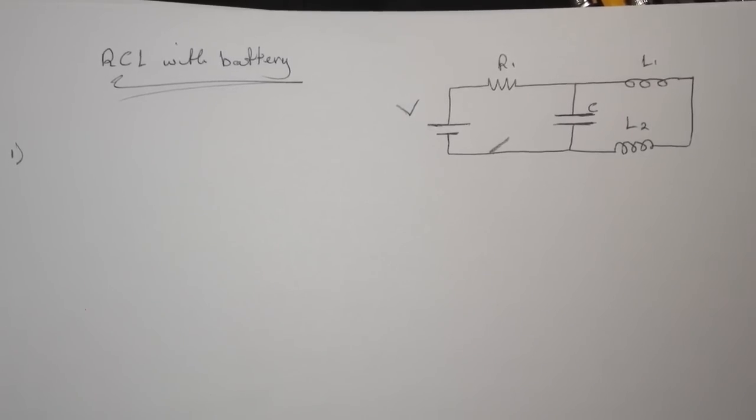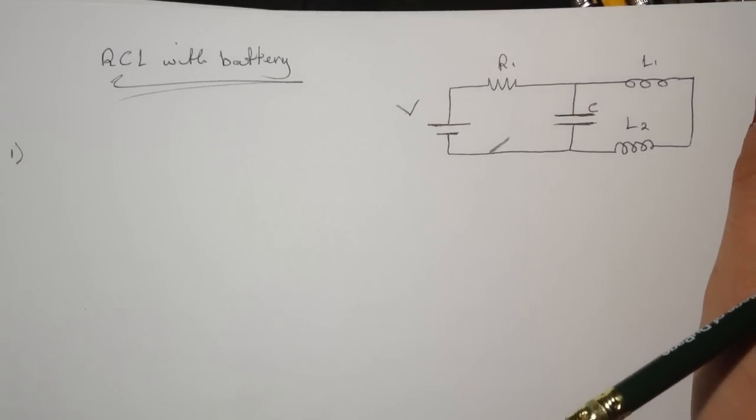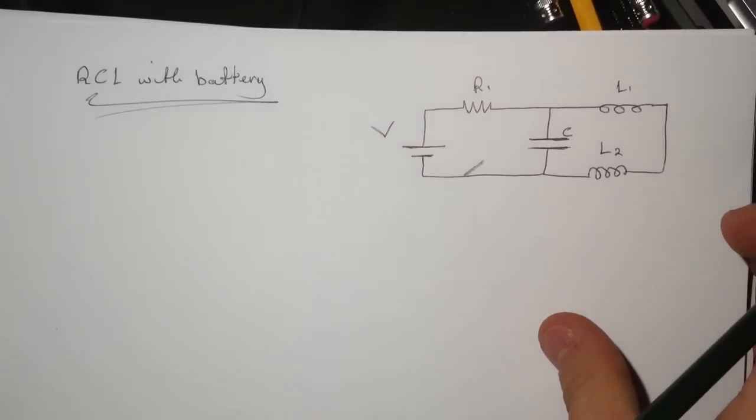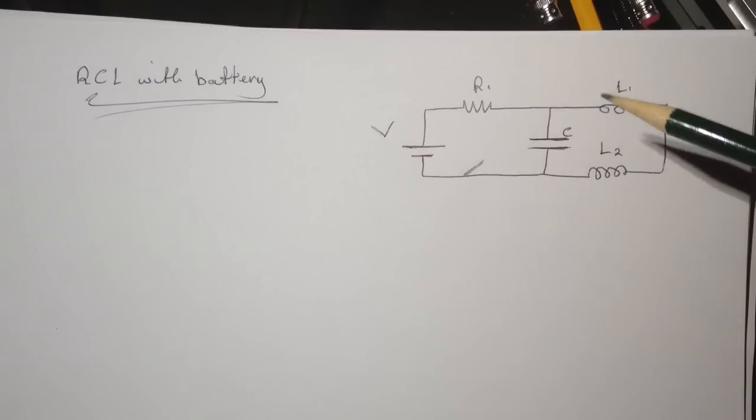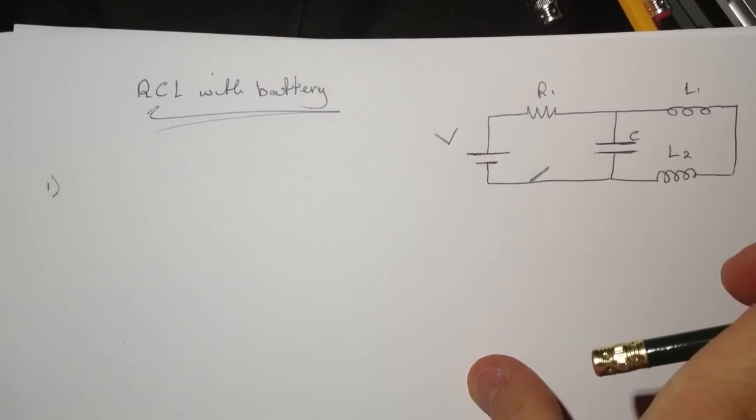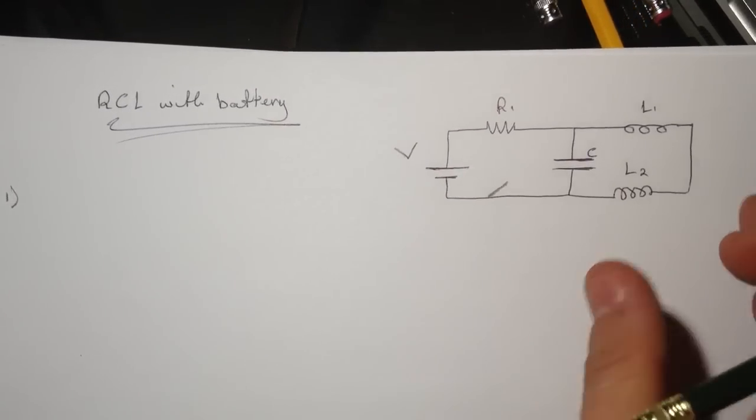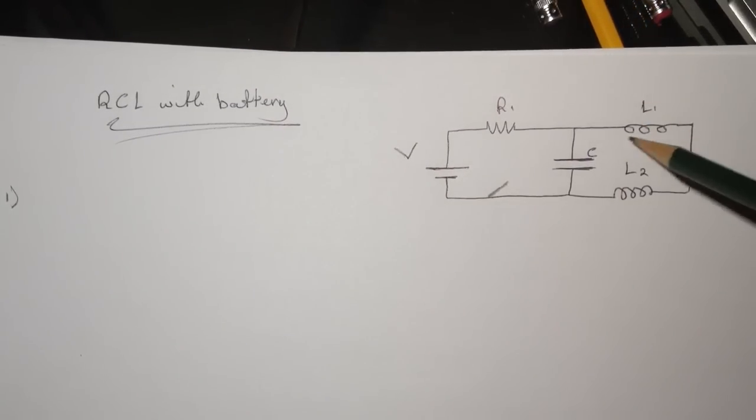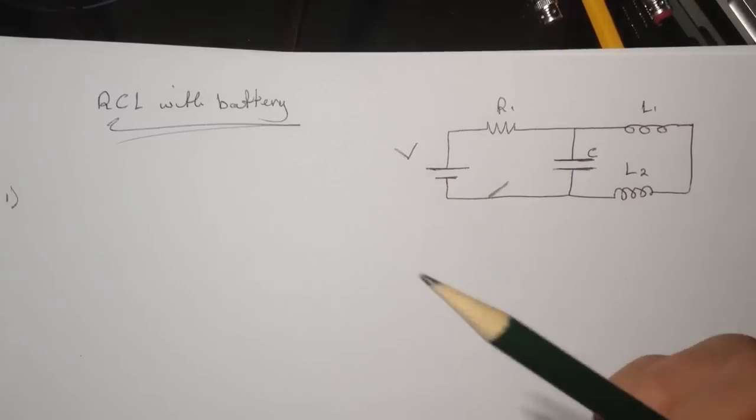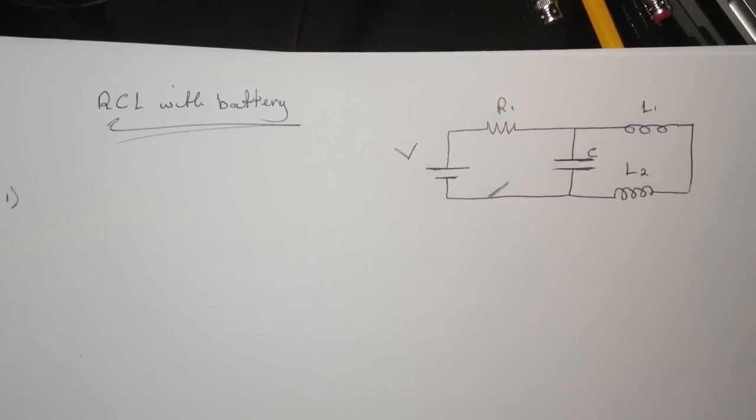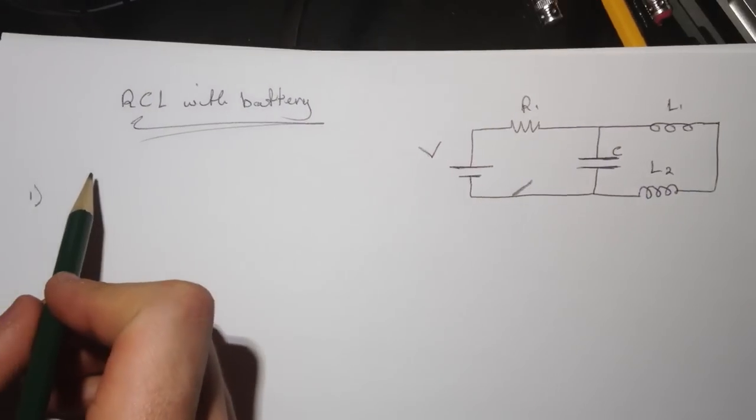Hi guys, this is another tutorial for a smart physical problem. The problem we're looking at is the RCL with battery. Here's the circuit we're looking at—it has a battery, resistor, capacitor, and two inductors. The first question is asking what is the energy in the first inductor, inductor number one L1, what's the energy stored in it after the switch is open? It was closed for a long time, then it was open.